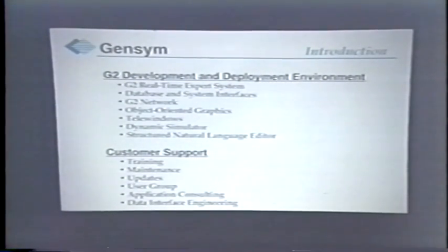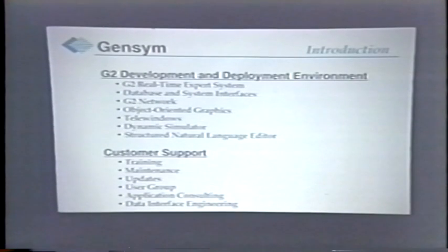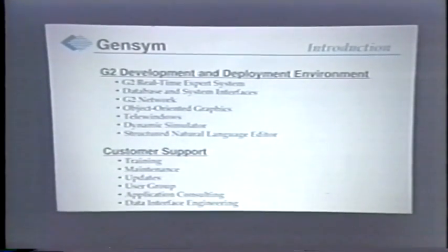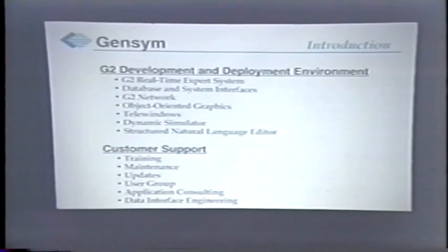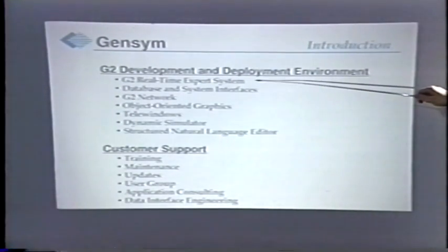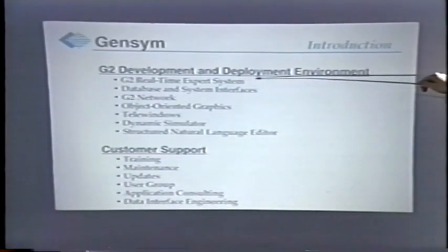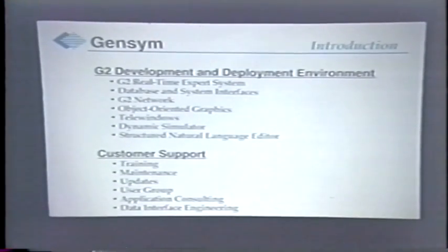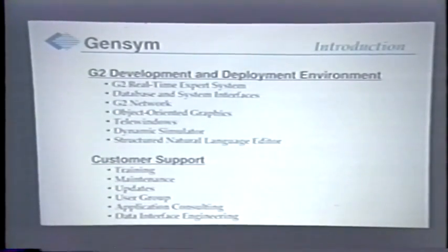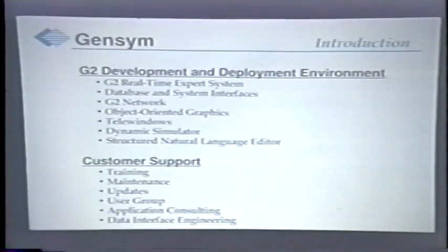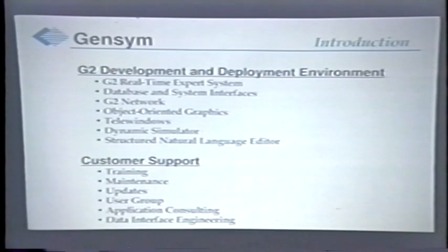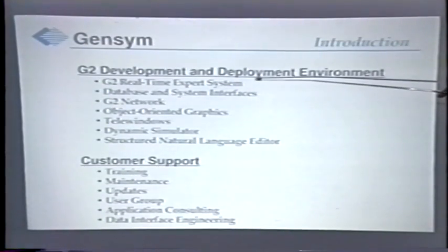G2 brings together a number of technologies, and these technologies brought together in an integrated package allow engineers and other professionals to develop their applications and put them online much more productively than individual programming. The center of G2 is the G2 real-time expert system, which allows a very strong knowledge-based reasoning capability. This can involve rule-based reasoning, but also procedures and models — it's a very rich rule-based, procedure, and model-based environment.